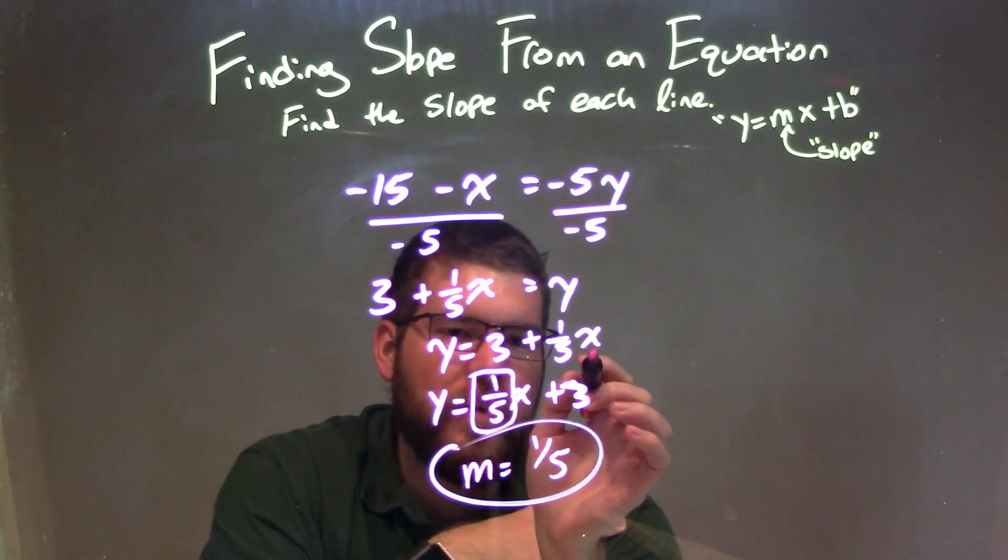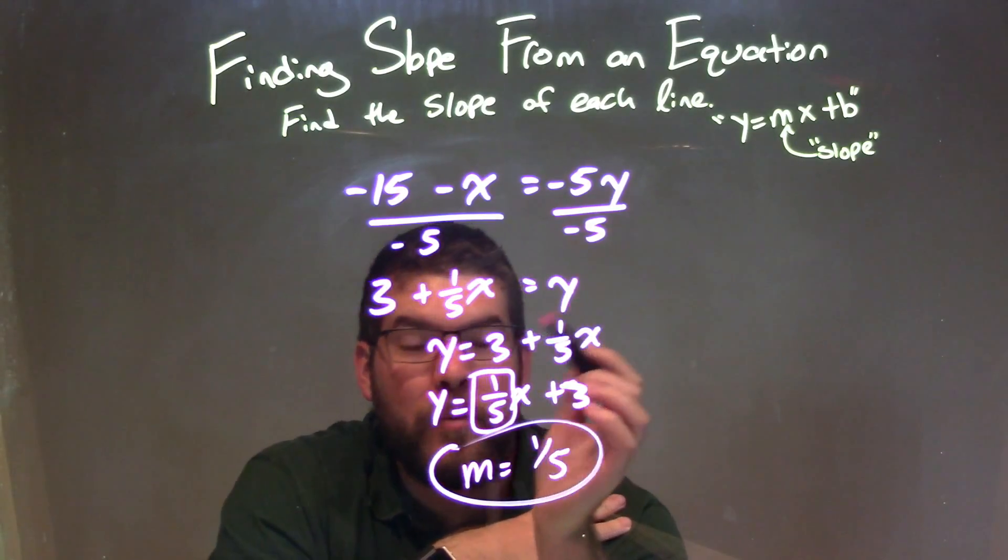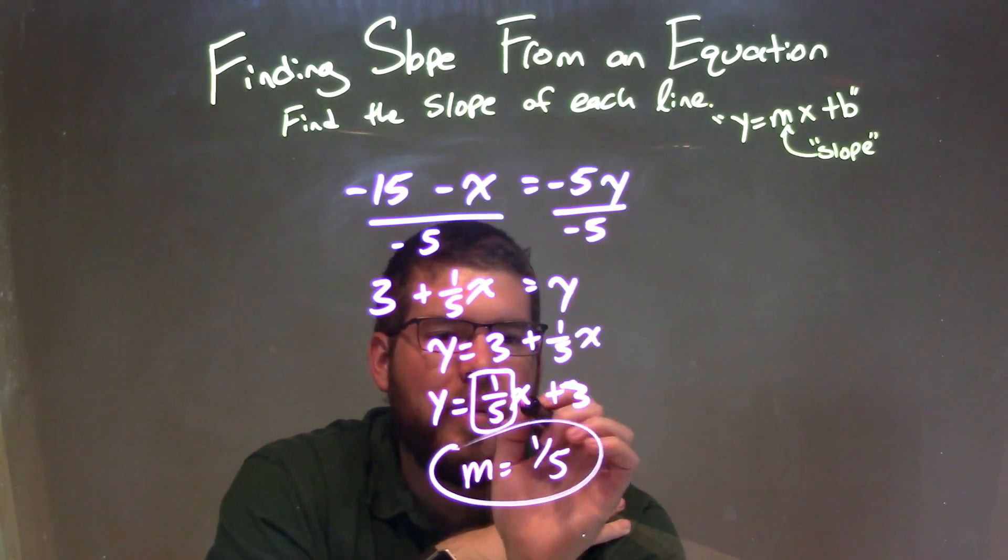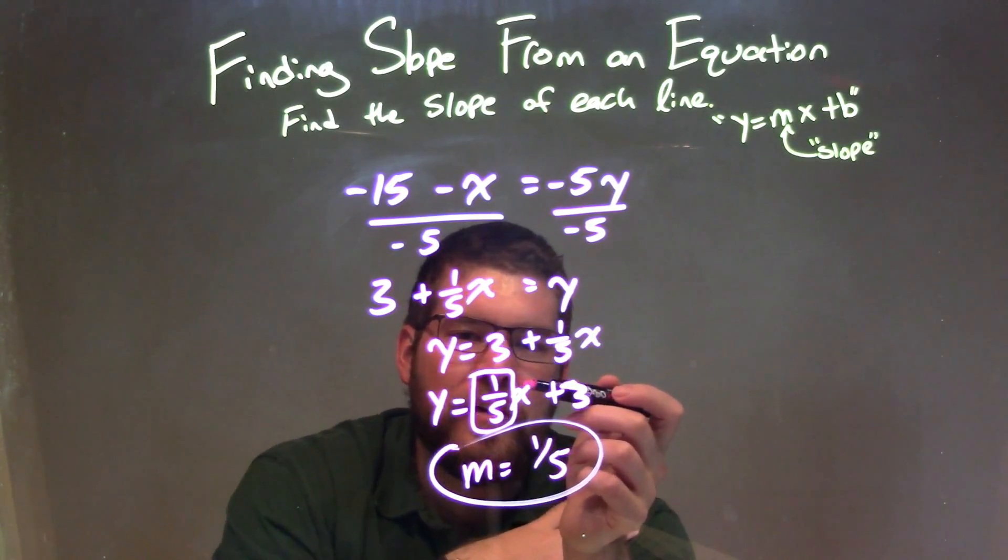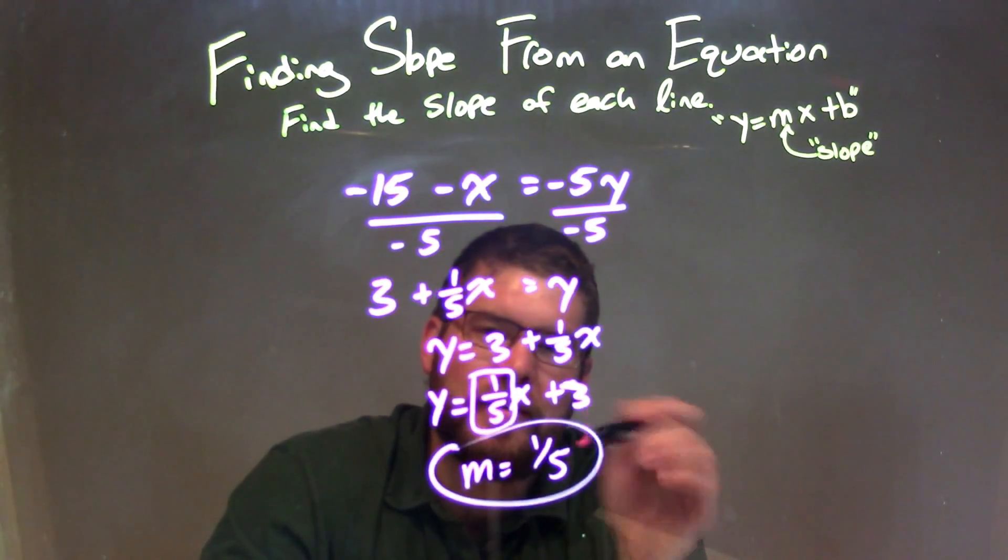Then rearranged it again, having one-fifth come first so it's easier to see the slope-intercept form: y equals mx plus b. The m value is just one-fifth, so our final answer for the slope is m equals positive one-fifth.